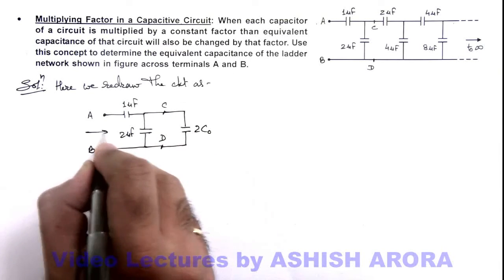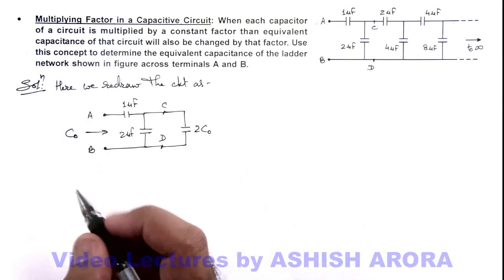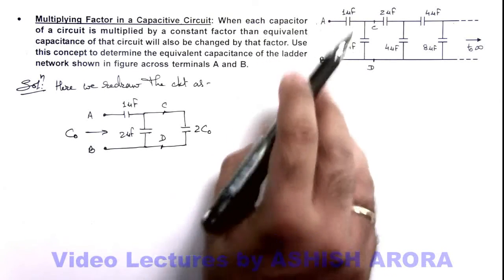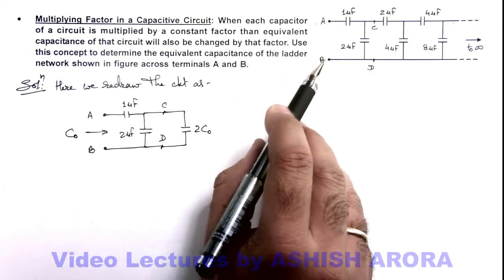If the equivalent capacitance across A and B is C_not, because you can see if all capacitances across A and B are doubled, then it'll become the capacitance across C and D.